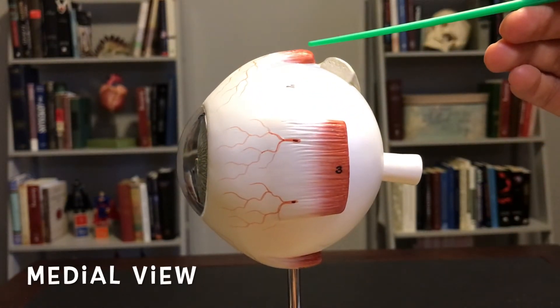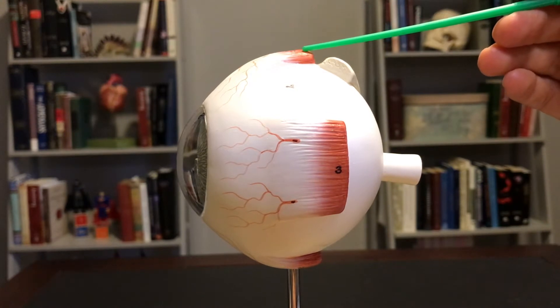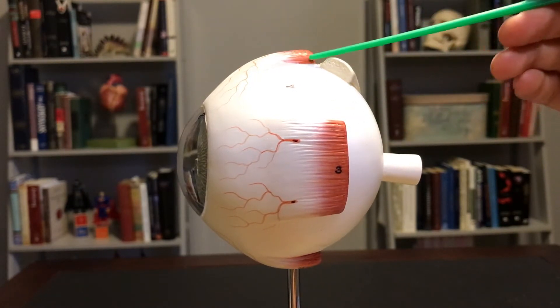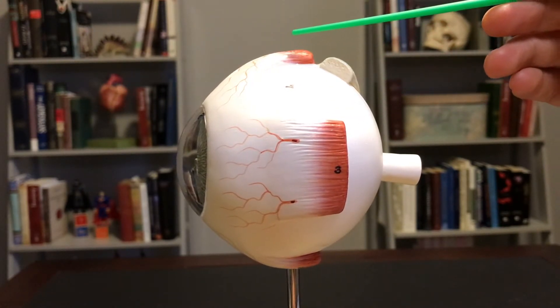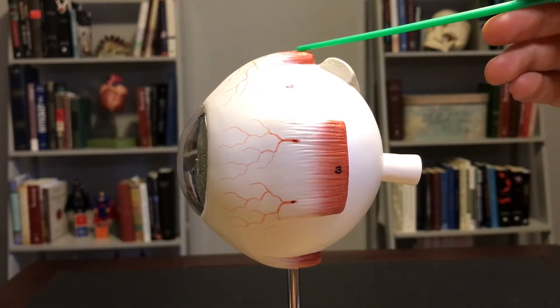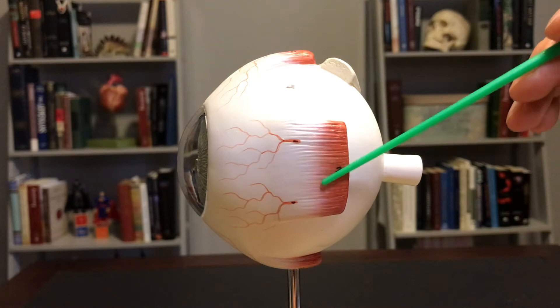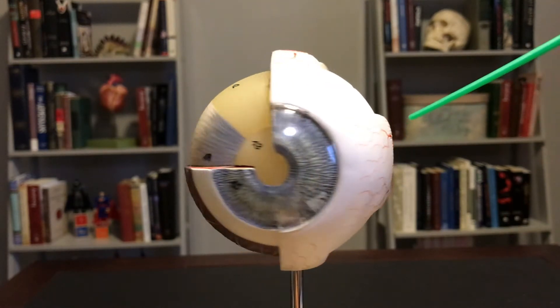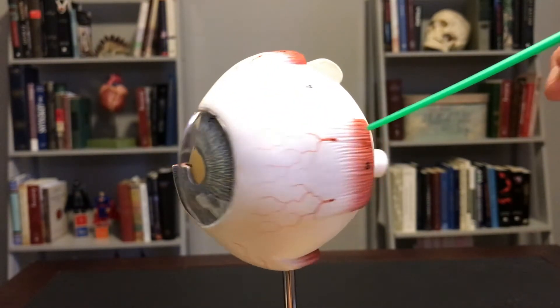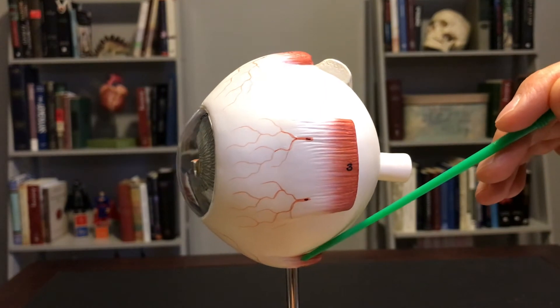This is where the muscles that control our eye basically grab onto. So we have superior rectus muscle, we have medial rectus muscle. This is medial rectus because we are looking at a right eye here. This would be inferior rectus muscle.